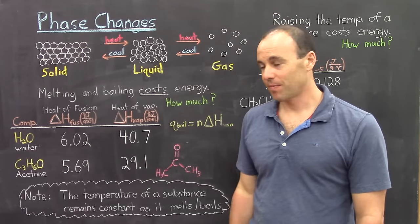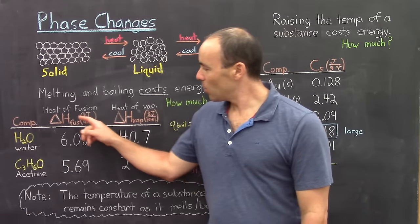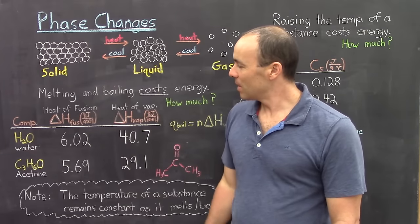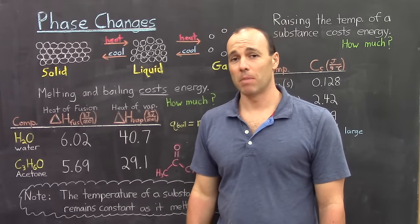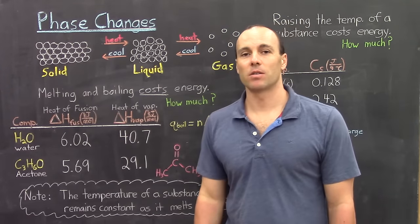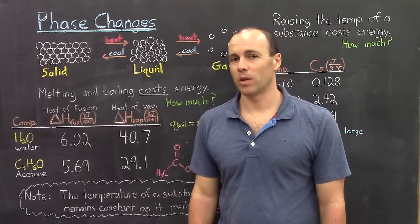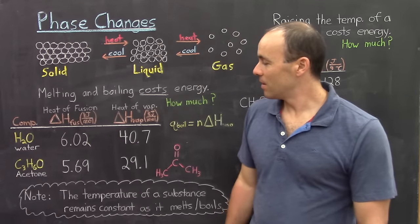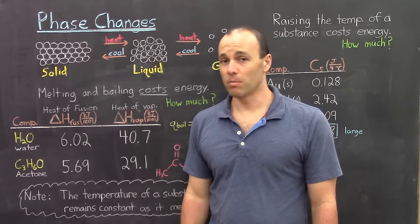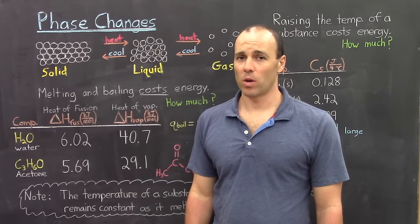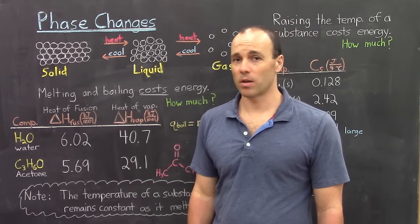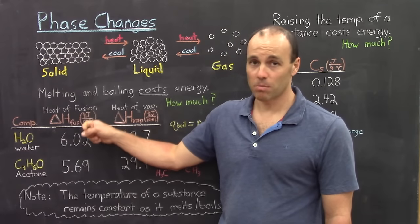So how much energy does it cost? That's given by the heats of fusion and vaporization. The heat of fusion is the energy cost to melt a solid when it's at the melting temperature. The heat of vaporization is the energy cost to vaporize a liquid when it's at the boiling temperature. The heat of fusion for water is 6.02 kilojoules per mole — so if you want to melt one mole of water, it's going to cost 6.02 kilojoules, and to melt two moles would cost twice that much.